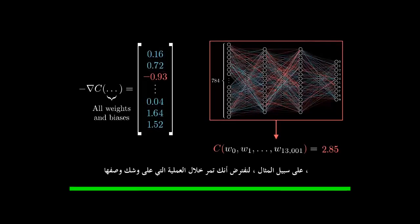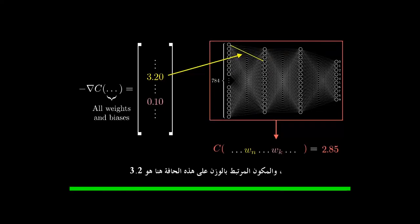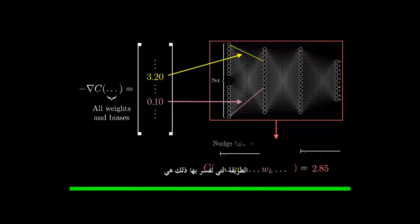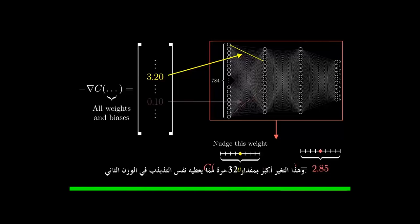For example, let's say you go through the process I'm about to describe and you compute the negative gradient, and the component associated with the weight on this edge here comes out to be 3.2, while the component associated with this edge here comes out as 0.1. The way you would interpret that is that the cost of the function is 32 times more sensitive to changes in that first weight. So if you were to wiggle that value just a little bit, it's going to cause some change to the cost, and that change is 32 times greater than what the same wiggle to that second weight would give.